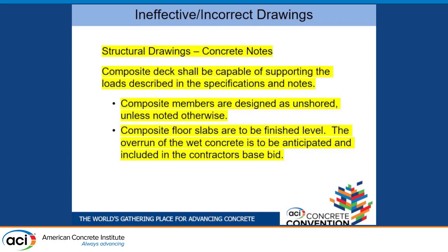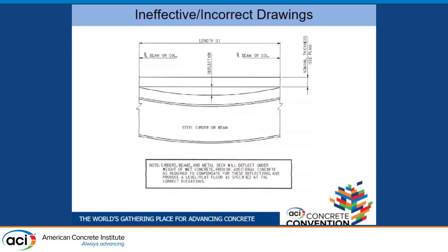In the concrete notes: 'Composite decks shall be capable of supporting the loads described in the specs. Members are designed as unshored unless noted otherwise. To be finished level.' Level is level. And there ain't no such thing as a level slab on metal deck — I've seen millions of square feet of slab on metal deck. But the contractor is supposed to take care of this in construction, and this is the diagram they include for the benefit of the contractor. It really doesn't work well at all in practice.